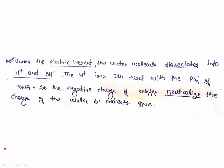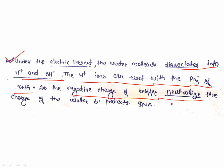Another very important point: without buffer, if only water is used, when electricity is turned on, the water molecules dissociate into H⁺ and OH⁻. The H⁺ ions can react with the PO₃⁻ groups of DNA (since DNA is negatively charged), causing great damage to the DNA. The buffer neutralizes these H⁺ ions from water dissociation, thereby protecting the DNA. So: the negative charge of the buffer neutralizes the charge of water and protects DNA during electrophoresis under electric current.